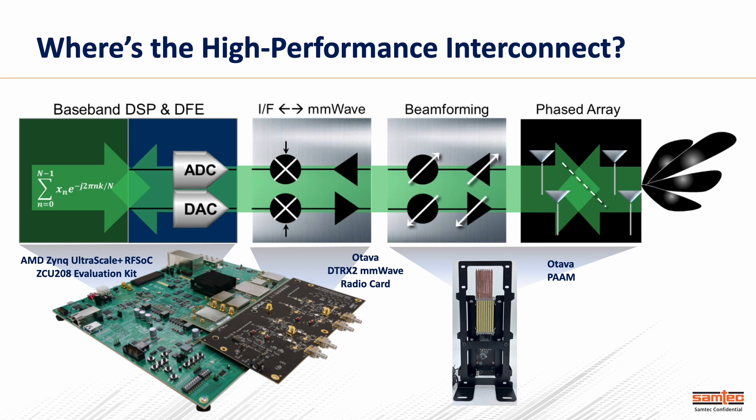Throughout that signal chain from the antenna to bits, there are any number of interconnection points — whether that's a high-speed board-to-board mezzanine-style connector, traditional PCB mount connectors, whether that's compression mount or SMA type, to RF cables and the like. It would be very easy to pull apart every transition from a PCB to a connector, or from a connector to a cable, and look at how that affects the signal integrity or RF integrity along the signal chain.